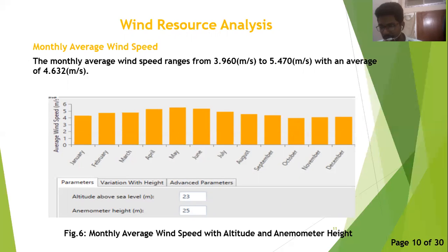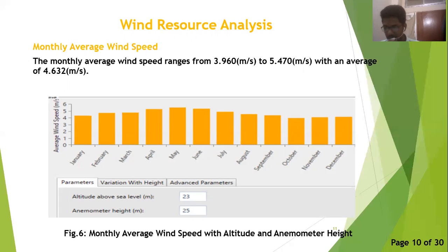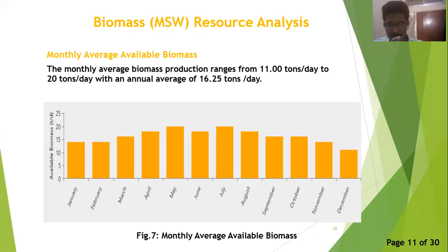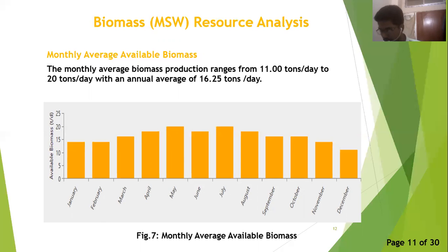Next, we consider the wind energy resources. The figure shows the monthly average wind speed ranging from 3.96 m/s to 5.47 m/s, with an average of 4.60 m/s. The altitude above sea level is 23 m and the anemometer height is 25 m. The biomass fuel which can be used in our biomass generator mainly consists of animal manure, food and vegetable wastes, paper and paper products, polythene and plastic, and wood and waste materials. Figure 7 shows the monthly average biomass production in the Rajshahi city area, which can be utilized as fuel for the biomass generator.